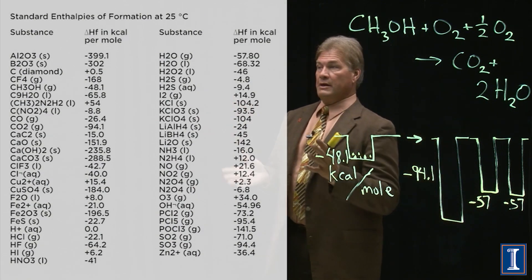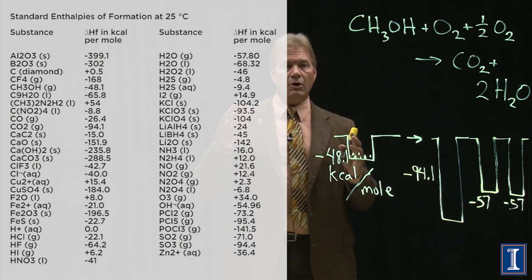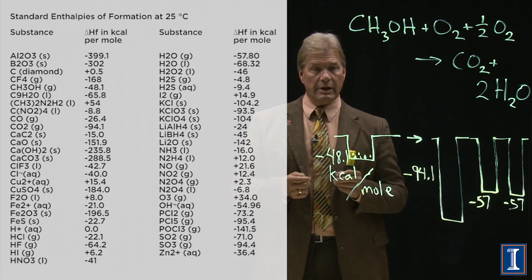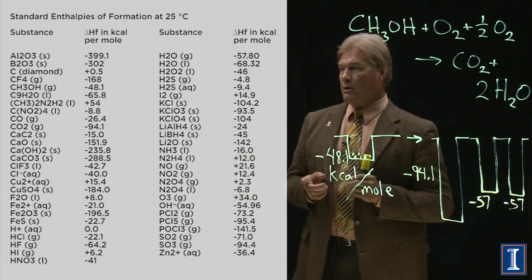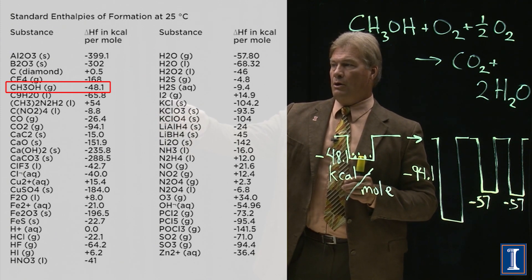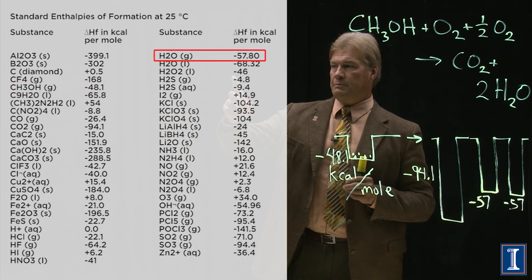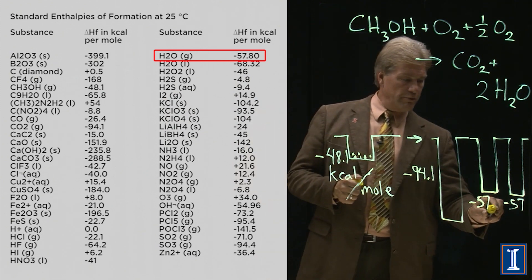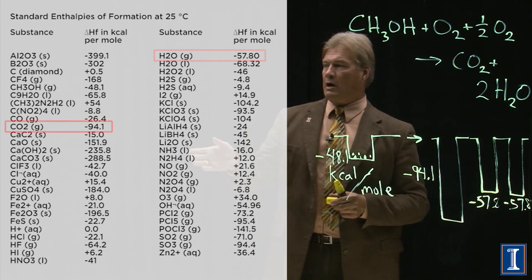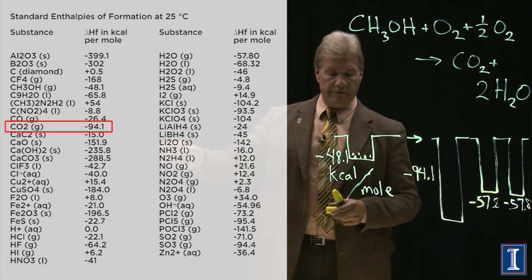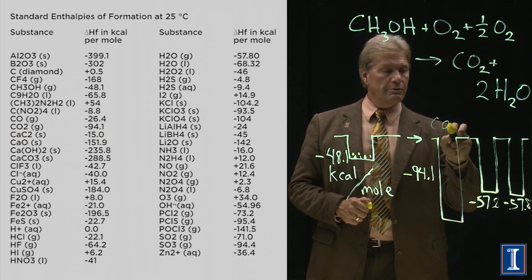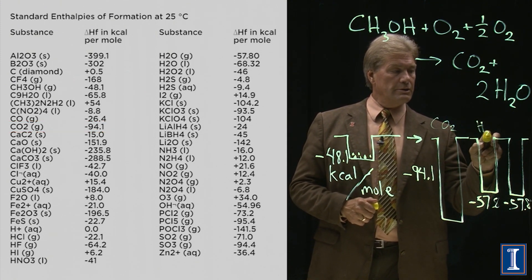How do I know those numbers? Well, you can get a chart like this. This is called enthalpy. And it tells you how tightly bound a certain molecule is. And you can see here that we could go to the methanol, minus 48.1. We could go to water as a gas, it's minus 57.8. And we could go to the carbon dioxide over here on the left at minus 94.1.